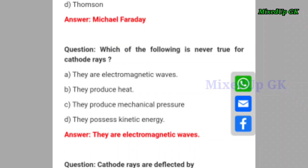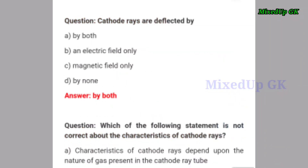Next question: which of the following is never true for cathode rays? Option A: they are electromagnetic waves. Option B: they produce heat. Option C: they produce mechanical pressure. Option D: they possess kinetic energy. The correct answer is option A — they are electromagnetic waves.